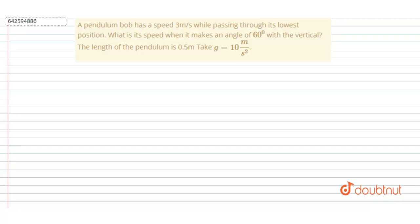Simple, so let's do it. We have to find out the speed when it is making an angle of 60 degree with the vertical, and at the lowest position it was having a velocity of 3 meter per second. So let's suppose at this instant it is having velocity v.